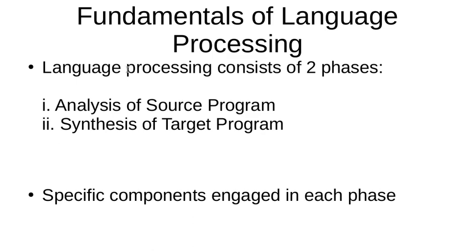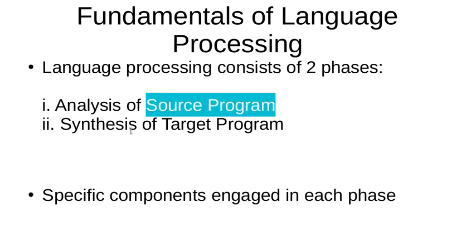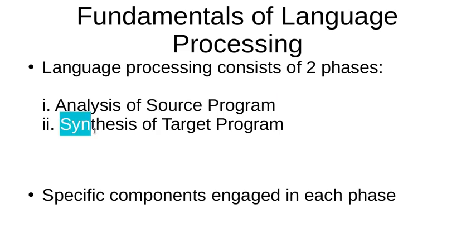Fundamentals of language processing consists of two phases. The first one is called the analysis phase, and the input program is also known as the source program. The second phase is known as synthesis, and synthesis will lead to the generation of the target program. There are specific components or parts of each phase, and we will try to understand how the analysis phase and the synthesis phase work.